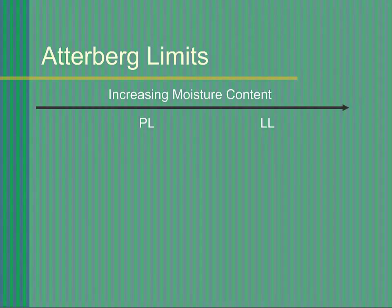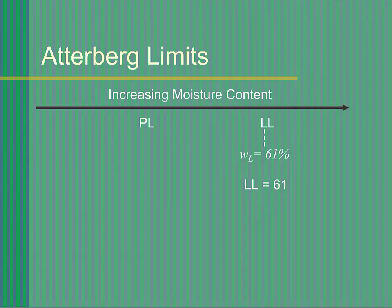For example, if the tests indicate the soil is at its liquid limit when it has a moisture content of 61%, then its liquid limit, LL, is 61. Likewise, if the tests determine that it is at its plastic limit when its moisture content is 22%, then the plastic limit, PL, is 22.